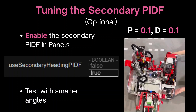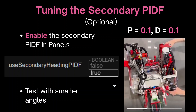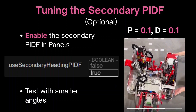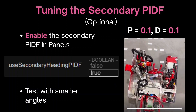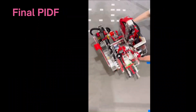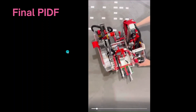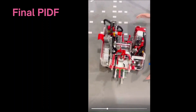Tuning the secondary PIDF will be very similar to tuning the main one, except we'll be trying to tune with smaller angles and see how precise and accurate the robot is while correcting back from small errors. Shown here is an example of a well-tuned secondary PIDF. Once you follow all of these steps, you should be done with the heading PIDF. Shown here is a video of a final tuned PIDF.